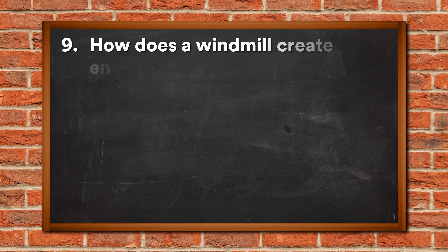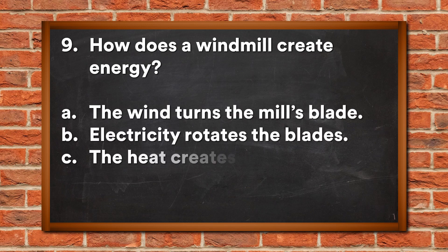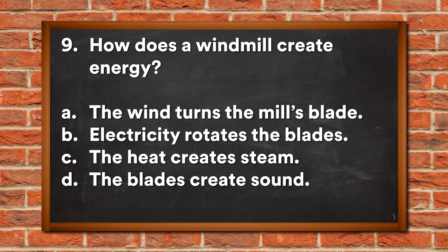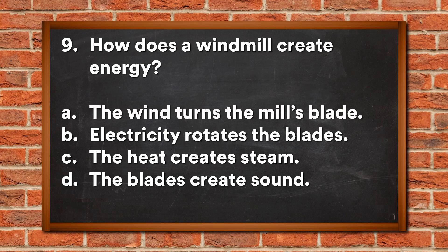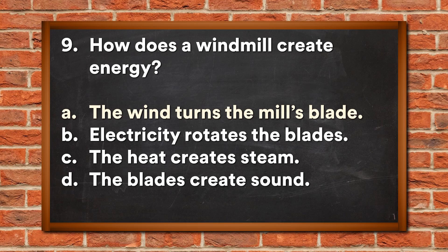Question 9: How does a windmill create energy? A. The wind turns the mill's blade, B. Electricity rotates the blades, C. The heat creates steam, D. The blades create sound. The answer is A, the wind turns the mill's blade.